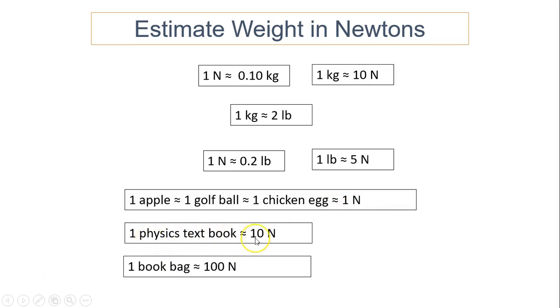On the other hand, a textbook, that's about two pounds. One pound is five Newtons. Two pounds, that's 10 Newtons. A book bag, that's about 20 pounds. Some high school book bags are heavy. That's about 100 Newtons.